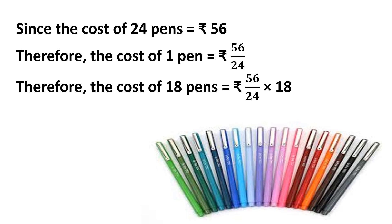At first, we will use the table of 8. 8 threes are 24, and 8 sevens are 56. And 3 sixes are 18. Now, 7 multiplied by 6 equals Rs. 42. It means the cost of 18 pens equals Rs. 42.